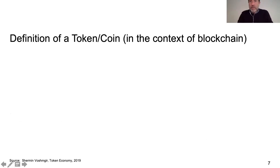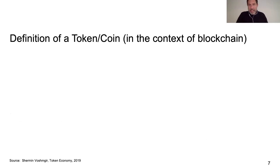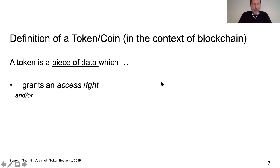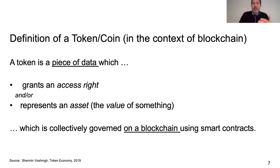Let's try to come up with a good definition of a token in the context of blockchain. This isn't easy — I did some research and the best definition I found was in the book 'A Token Economy' by Shermin Voshmgir. So a token is a piece of data which grants an access right and/or represents an asset — meaning the value of something — which is collectively governed on a blockchain using smart contracts.